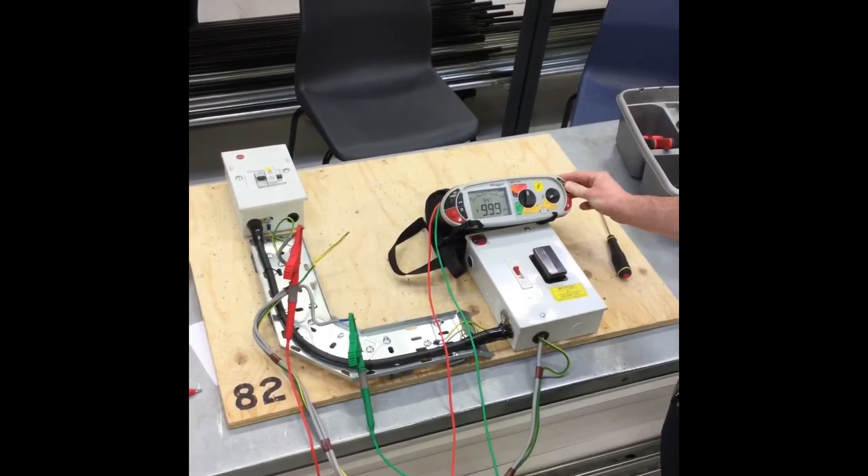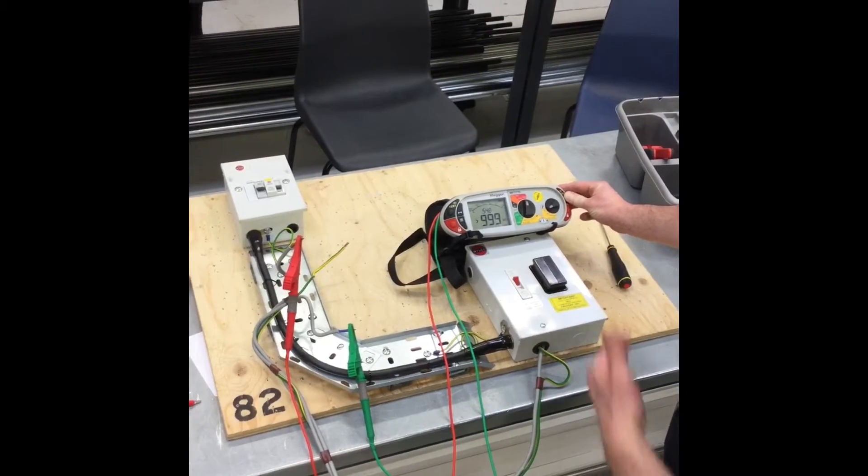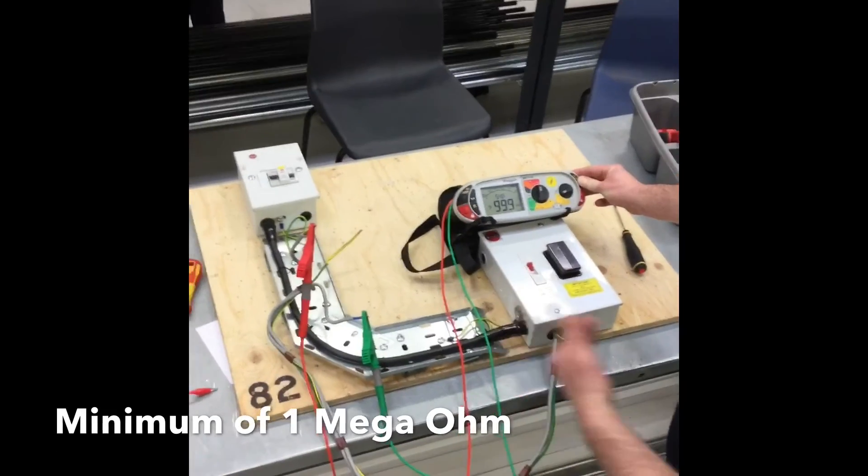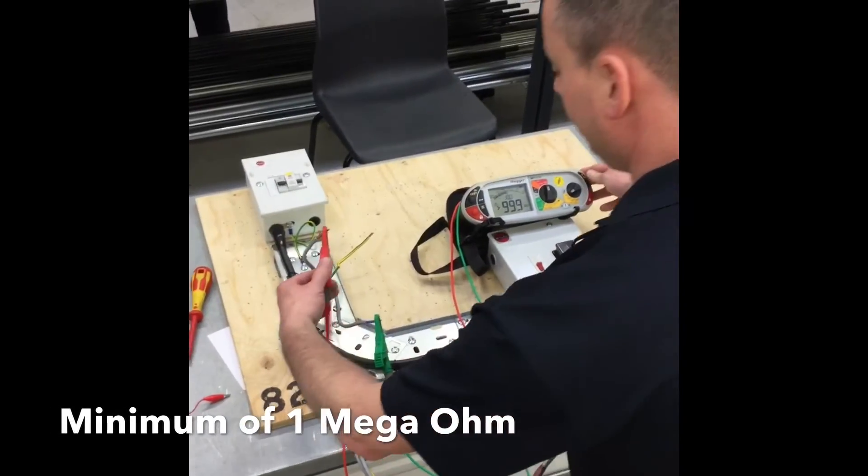Insulation resistance is greater than the machine can read—greater than 999—above the minimum accepted of one mega ohm, above two mega ohms where further investigation is required. Move around.